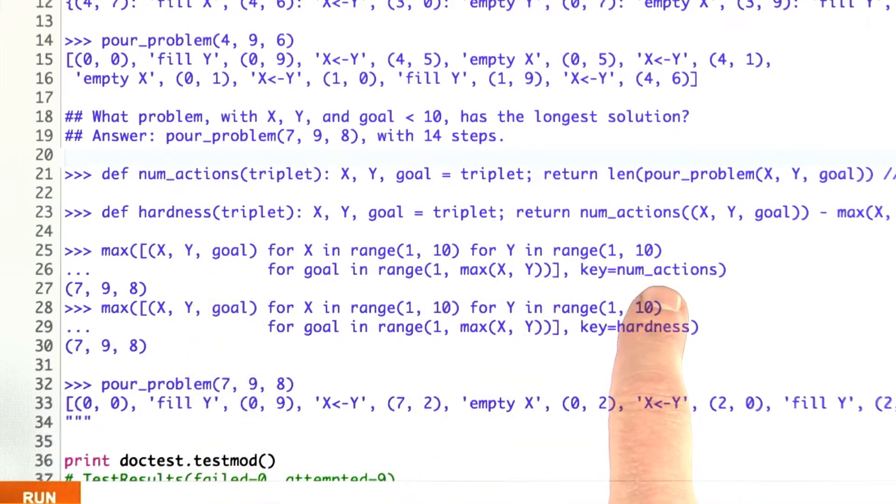What's the longest? What's the hardest? Which combination of those takes the most actions? The answer was if you're given glasses of size 7 and 9 and asked to pour out 8, that's the hardest problem within that range.